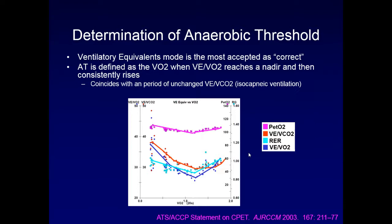Anaerobic threshold is defined as the point at which you switch from aerobic to anaerobic metabolism, where lactate is created. The ventilatory equivalence method is the most accepted approach. Anaerobic threshold is defined as the VO2 at which the ventilatory equivalence of oxygen, or VE/VO2, reaches a nadir and then consistently rises. On the graph, this dark blue line comes down, hits a nadir point, and then comes back up.